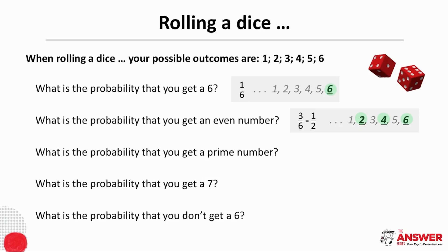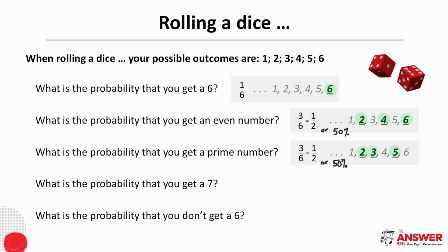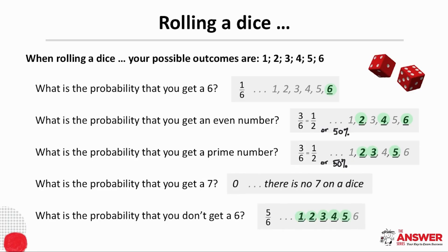We could therefore also say the probability is 50 percent. The probability of getting a prime number: the prime numbers on a dice are two, three, and five, so here we also have a three in six chance, which means the probability is a half or 50 percent. What is the probability of getting a seven? There is no seven on a dice, so this is not possible, and the probability is therefore zero. What is the probability of not getting a six? There are five numbers other than six on a dice, so the chances are five in six, which means the probability is five sixths.